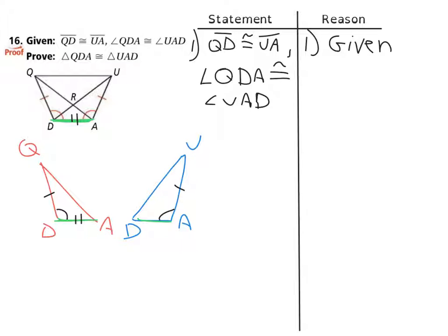see that they're sharing side DA. That's this right here, that's that right there - sharing that. So it's reflexively congruent to itself. If we drew it into the separated illustrations, we would see that we've got side-angle-side congruence. The first thing we need to do is establish for number two that